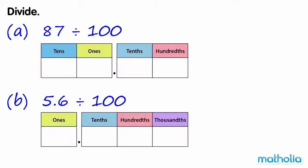Divide. A. 87 divide 100. Write 87 in a place value chart. We can divide by 100 by shifting the digits two places to the right. 87 divide 100 equals 0.87. B.